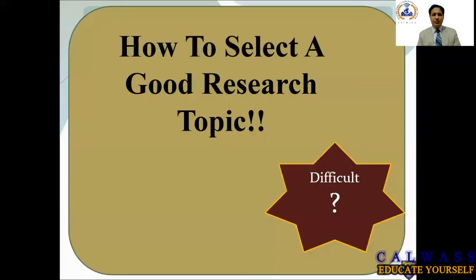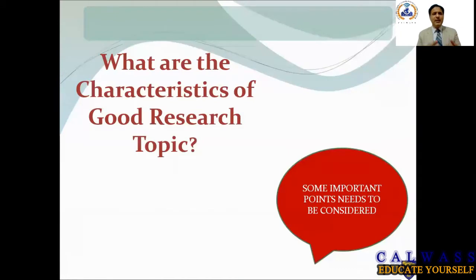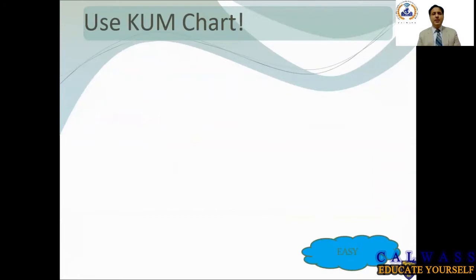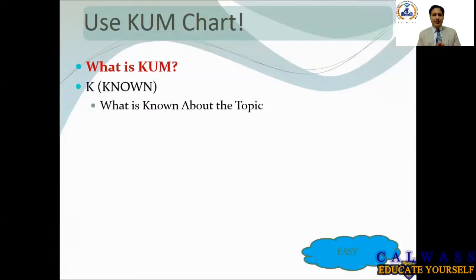The first thing we need to understand is how to select a good research topic and what are the characteristics of good research topics. There must be some points which need to be considered and understood properly. In order to understand these things, the first thing we need to consider is the use of the KUM chart. KUM stands for Known — what is known about the topic. Whenever you approach any topic, you need to understand what is known about it, which is available through literature review.